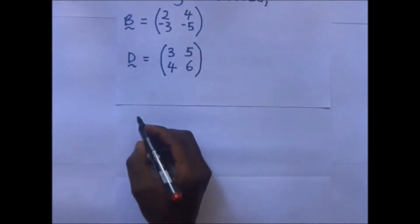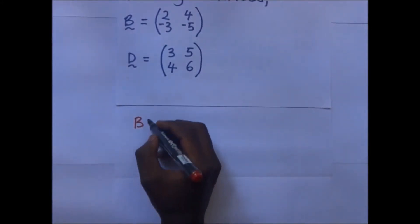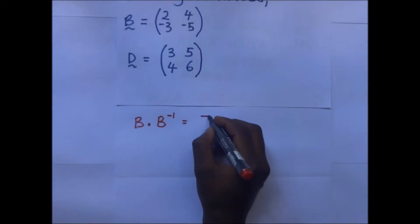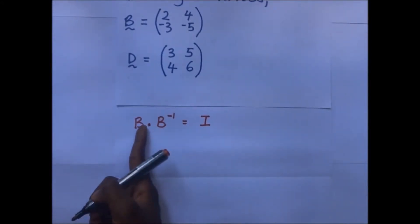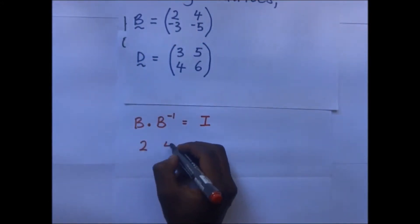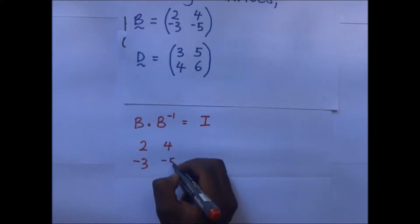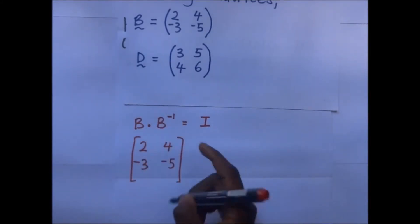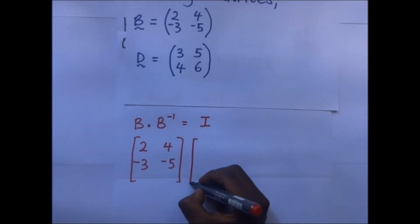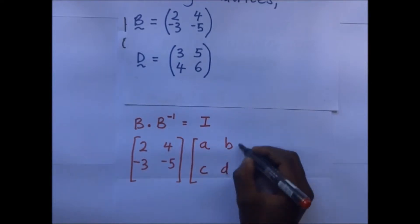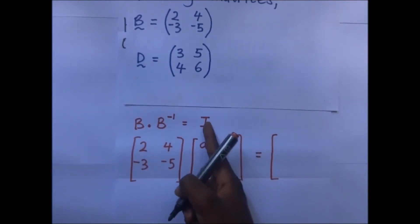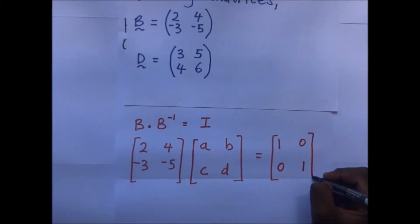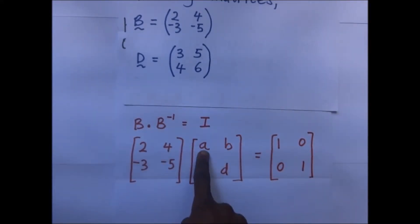We want to find matrix B — when you multiply matrix B by its inverse, it is supposed to give us an identity matrix I. Matrix B is [2, 4; -3, -5]. We multiply it by its inverse, which we call [A, B; C, D], and we are supposed to get the identity matrix [1, 0; 0, 1]. Our task is to find the values of A, B, C, and D.